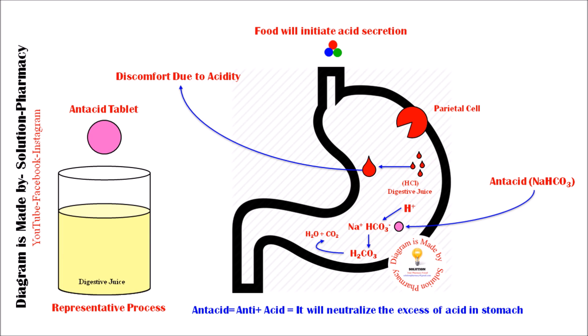An antacid is a medication used to neutralize the excess acid present in the stomach. It neutralizes acid that has already been secreted, forming salt and water. This means antacids do not inhibit the secretion of acid in the stomach — they only neutralize the excess acid already present.